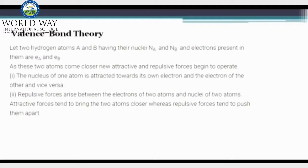After understanding the VSEPR theory, let us move on to valence bond theory, which explains that while the formation of two atoms in order to form a molecule takes place, new attractive and repulsive forces begin to operate. The nucleus of one atom is attracted towards its own electron and the electron of the other atom starts attracting towards the nucleus.